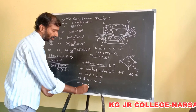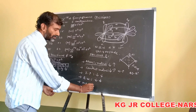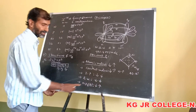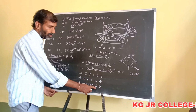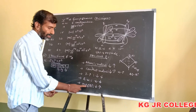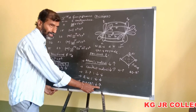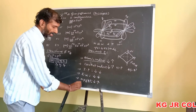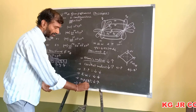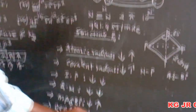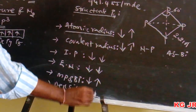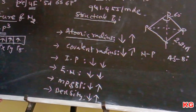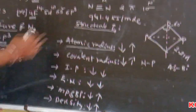Melting and boiling points increase from nitrogen to bismuth, from top to bottom. Densities in the group also increase from top to bottom. These are the general characteristics of the 5th group elements.